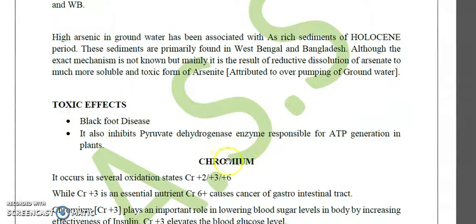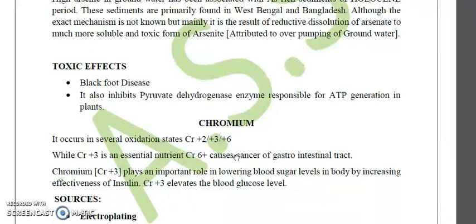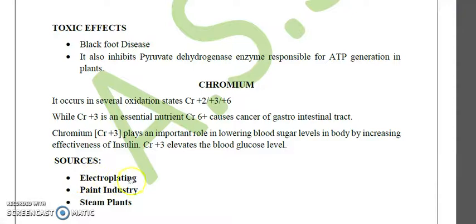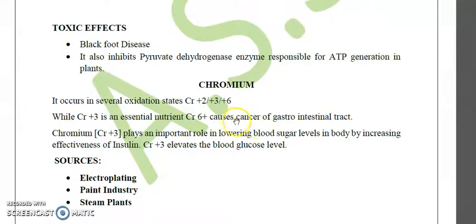Now let's discuss chromium, which is also a very important element. Sources of chromium include the electroplating industry, paint industry, and steam plants. Chromium occurs in several oxidation states — plus two, plus three, and plus six. Chromium three plus (Cr³⁺) is an essential nutrient for the human body, while hexavalent chromium (Cr⁶⁺) in water is toxic and causes cancer of the gastrointestinal tract.